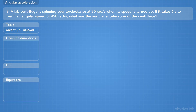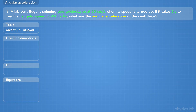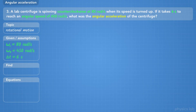A lab centrifuge is spinning counterclockwise at 80 radians per second when its speed is turned up. If it takes 6 seconds to reach an angular speed of 450 radians per second, what was the angular acceleration of the centrifuge? The initial angular velocity is positive 80 radians per second, and the final angular velocity is 450 radians per second. The period of time is 6 seconds, and the problem asks us to find the angular acceleration.